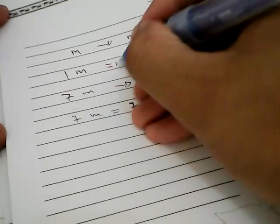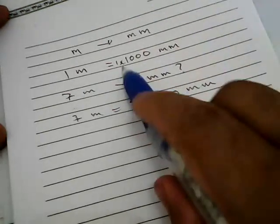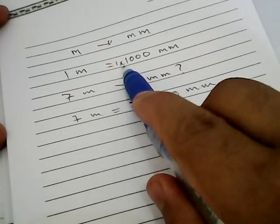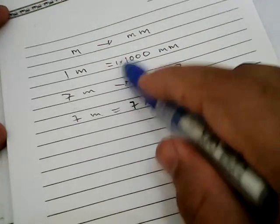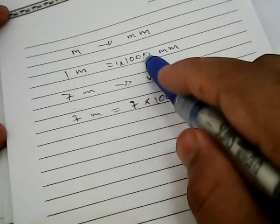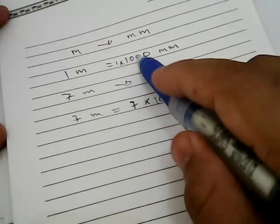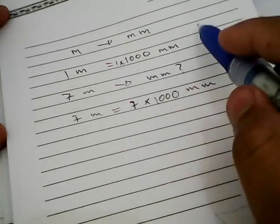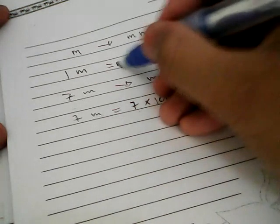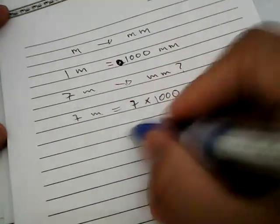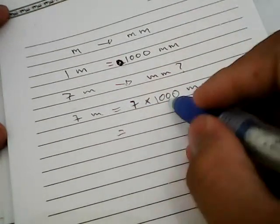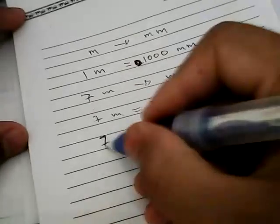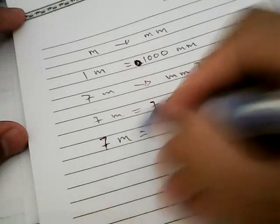But we don't have to write it again because we know anything multiplied with one will give itself, the same number except zero, right? So we'll multiply this 7 by 1000.